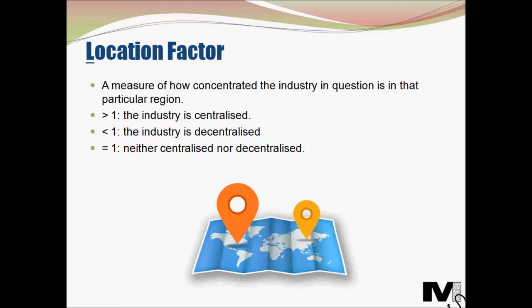In terms of its interpretation: if the Location Factor for an industry in a region is greater than one, the industry tends to be centralized — meaning there is a higher presence of the industry in the region compared to the average presence in the entire country. If the value is less than one, the industry tends to be decentralized and has a lesser presence in the region compared to the country. And if the value is exactly one, the industry is neither centralized nor decentralized.